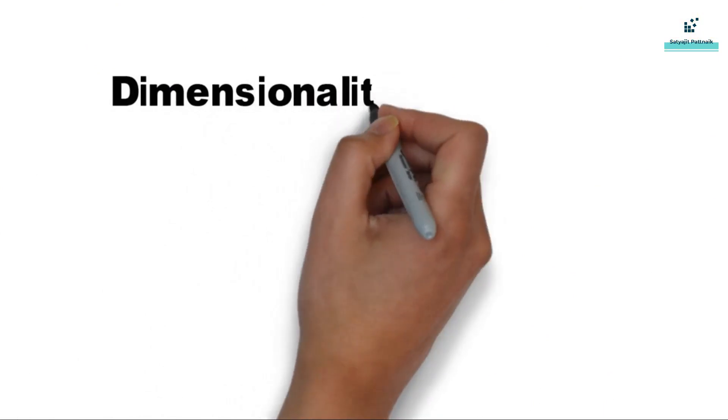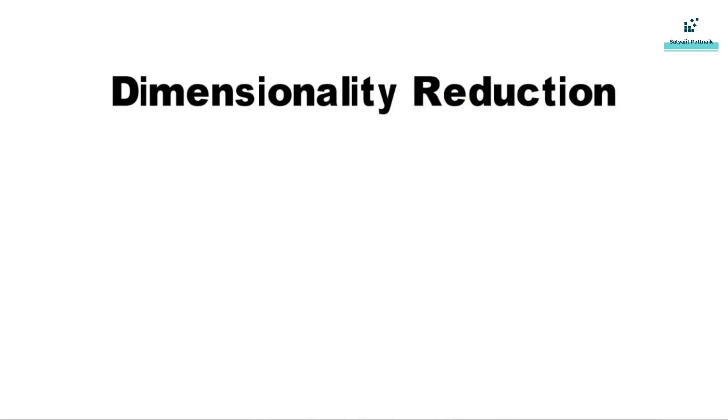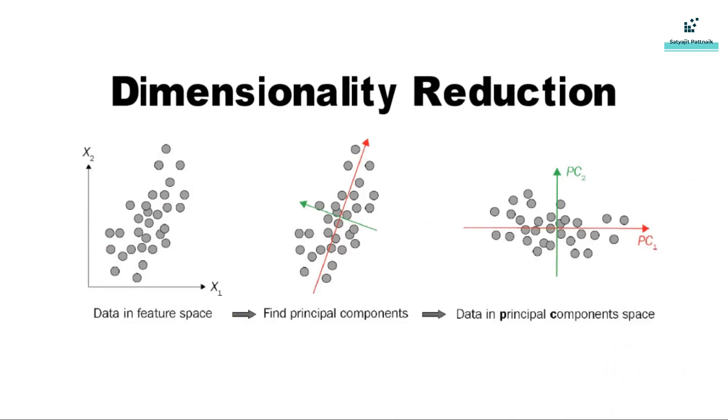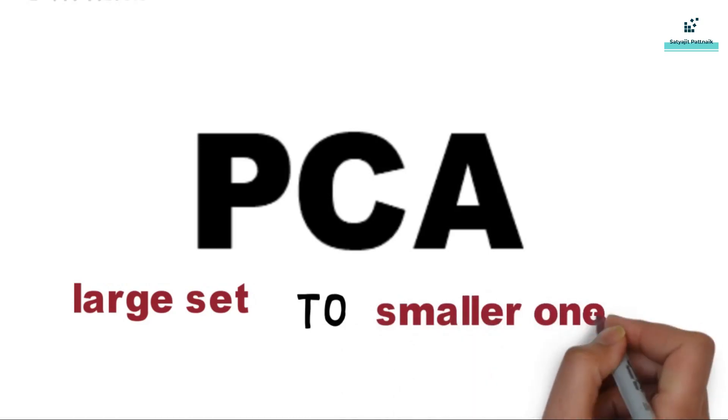After clustering, the next topic of discussion under unsupervised learning is dimensionality reduction, which is the process of reducing the features or dimensions of your feature set. A very common technique is PCA, which is principal component analysis. PCA is used to reduce the dimensionality of large datasets by transforming a large set of variables into a smaller one that still contains most of the information in the large set.